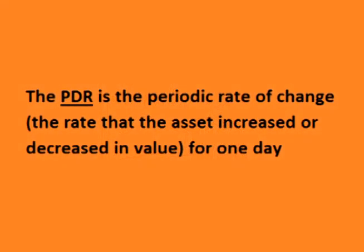The periodic daily return is the rate that the asset changes in price or value each day. The periodic daily return, or PDR, is different than the simple percentage that most people are used to using. It is the continuously compounded rate of change for one day.